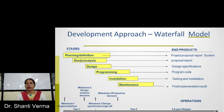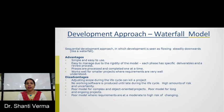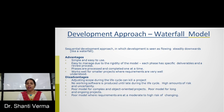You have to make a short-term plan or long-term plan for making an MIS system. The sequential development approach, in which development is seen as flowing steadily downwards like a waterfall model, has advantages: it is simple and easy, phases are processed and completed one at a time, and it works well for smaller projects where requirements are very well understood. Disadvantages include: adjusting scope during the life cycle can kill a project, no working software is produced until late in the life cycle, and there is a high amount of risk and uncertainty in cases where requirements are at moderate to high risk of changing.